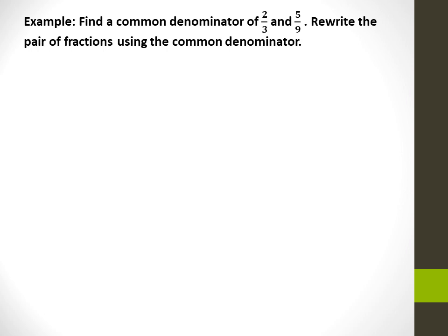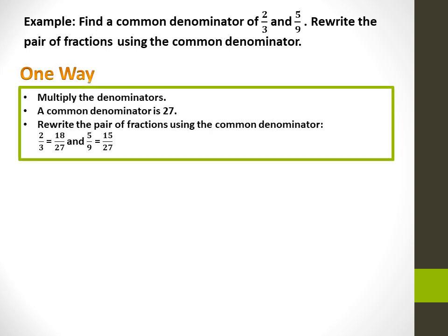Find the common denominator of 2 over 3 and 5 over 9, and rewrite the pair of fractions using the common denominator. One way is to multiply the denominators: 3 times 9 is equal to 27, so a common denominator is 27. 2 over 3 is equal to 18 over 27, since you multiply the numerator and denominator by 9. And 5 over 9 is equal to 15 over 27, since you multiply the numerator and denominator by 3.